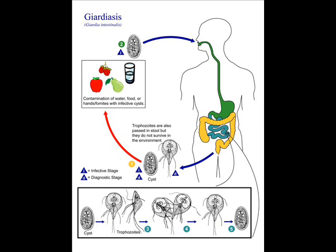The cyst is the infective stage. It is oval or ellipsoid in shape, approximately 10 to 14 microns in length. The mature cyst will have up to four nuclei, and the immature cyst will have two. Median bodies are also present.